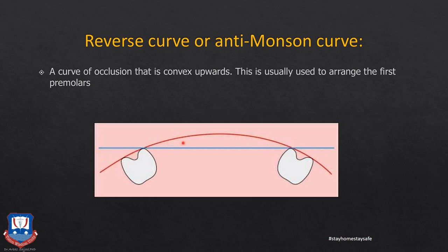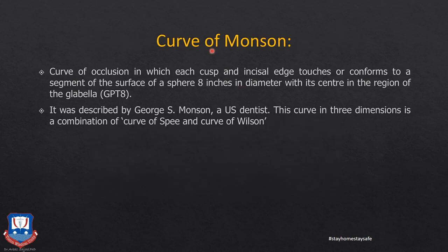The reverse or anti-Monson curve is usually used to arrange the first premolar: in a glass-plate relationship, only the buccal cusp of the maxillary first premolar should touch the glass plate, which is because of this reverse curve. The curve of Monson is also a medial-lateral curve — a curve of occlusion in which each cusp and incisal edge conforms to a segment of a sphere 8 inches in diameter with its center at the glabella, described by George Monson.